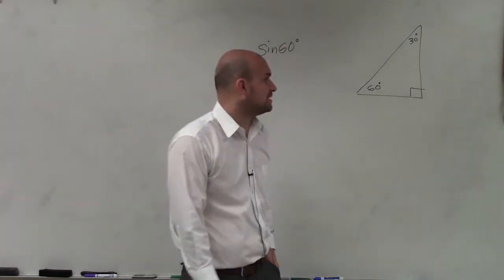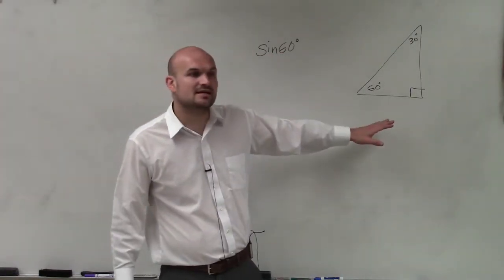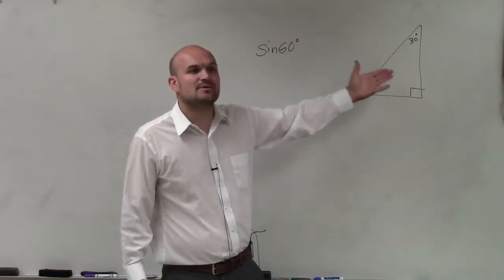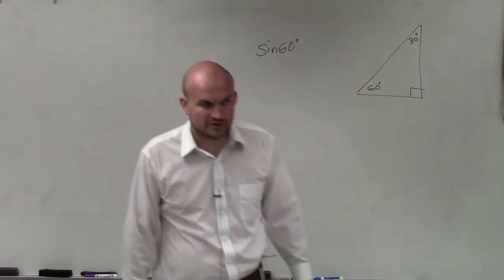Because remember, if you guys remember, we created this by an equilateral triangle, and we cut the equilateral triangle in half. That's how we came up with the relationship of a 30-60-90 triangle.